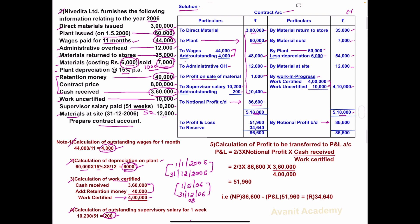This notional profit is to be distributed — transferred to profit and loss account, and the remaining amount goes to reserve. For that we calculate Note number 5: Calculation of profit to be transferred to profit and loss account.